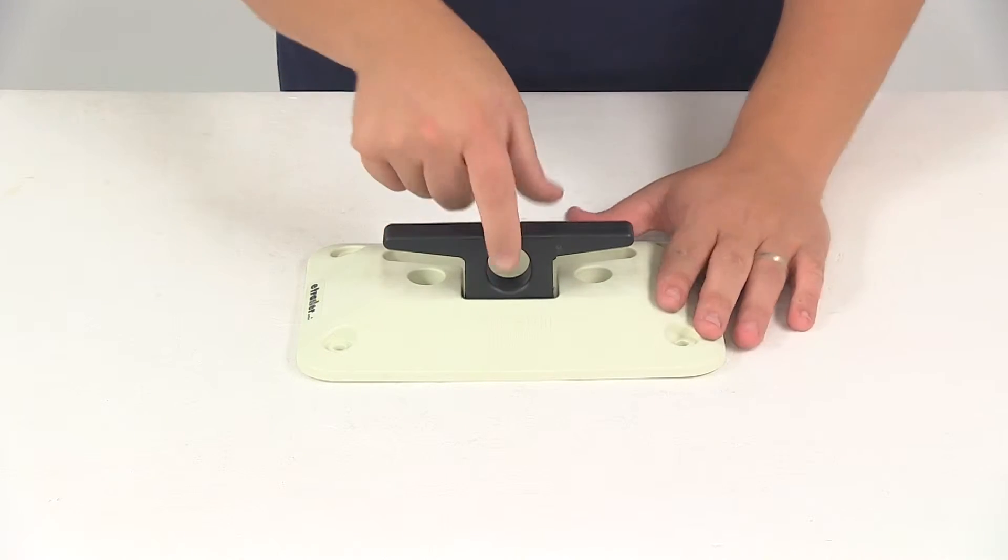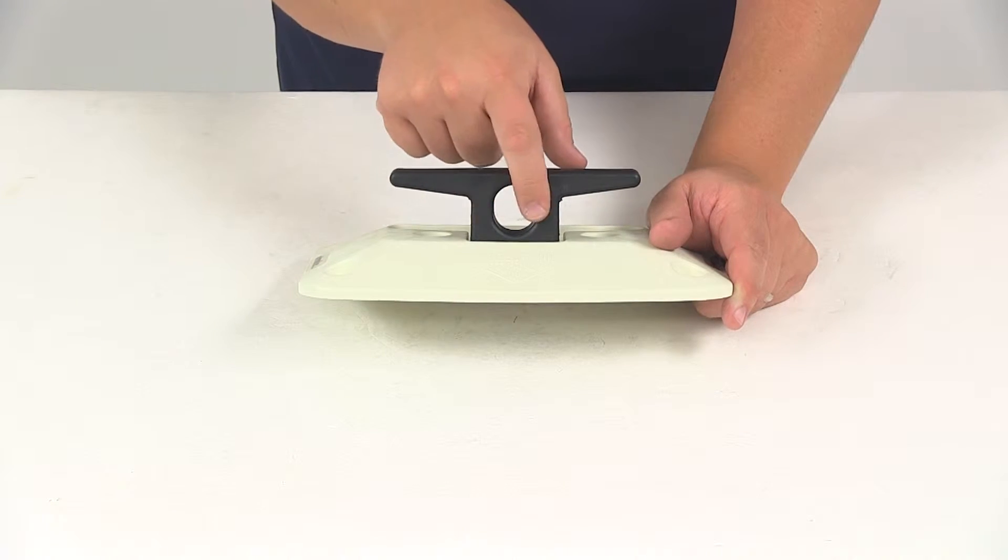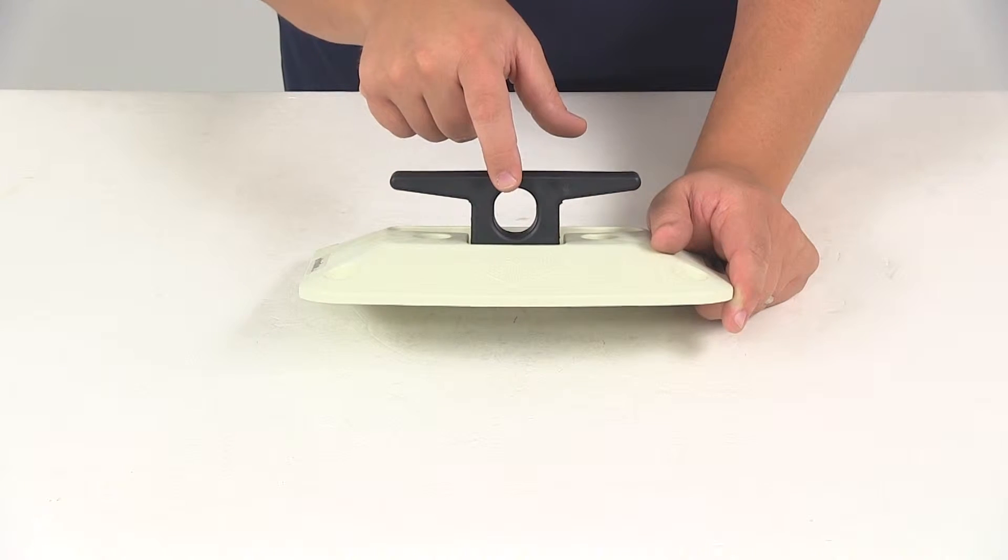You can see here that we have the hole right here in the cleat. That's going to be a little bit elongated, so going in this direction it's going to measure one inch, and going up and down that's going to give us a measurement of one and one eighth of an inch.